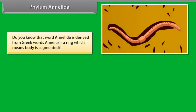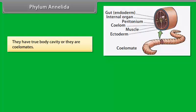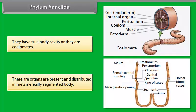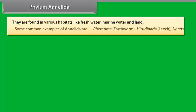Phylum Annelida. The word Annelida is derived from Greek word 'anilis' meaning ring, which means the body is segmented. The animals of Phylum Annelida are bilaterally symmetrical, multicellular, and triploblastic. They have a true body cavity, or they are coelomates. There are organs present and distributed in a metamerically segmented body. They are found in various habitats like freshwater, marine water, and land. Common examples are Pheretima (Earthworm), Hirudinaria (Leech), and Nereis.